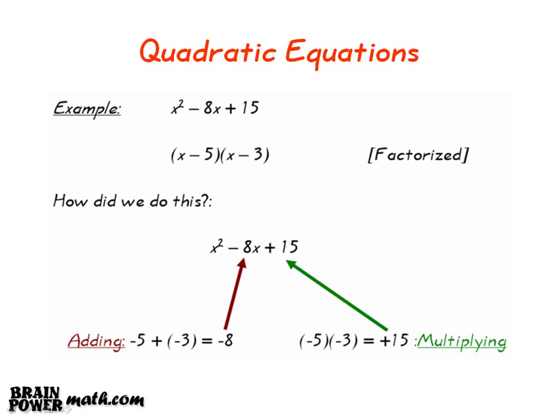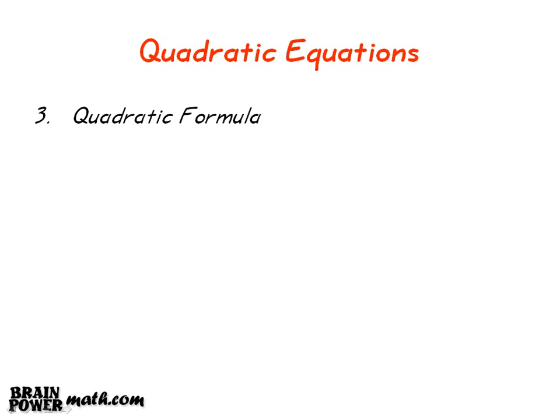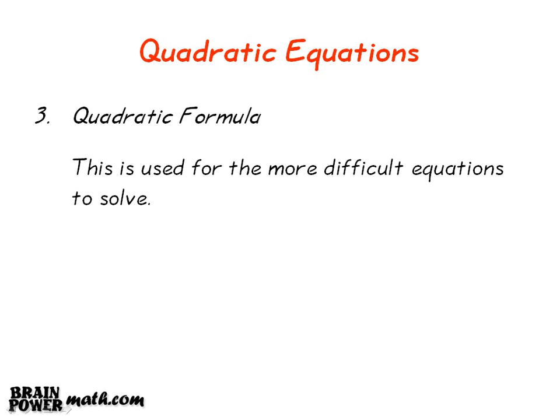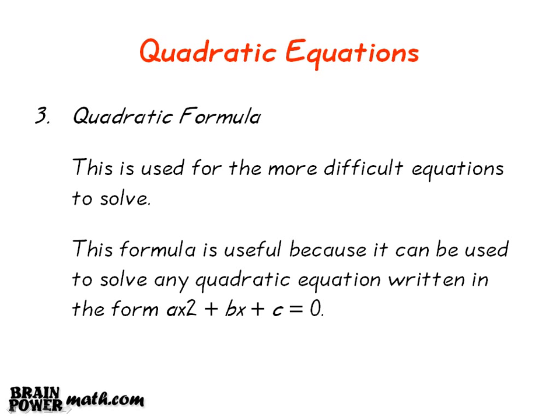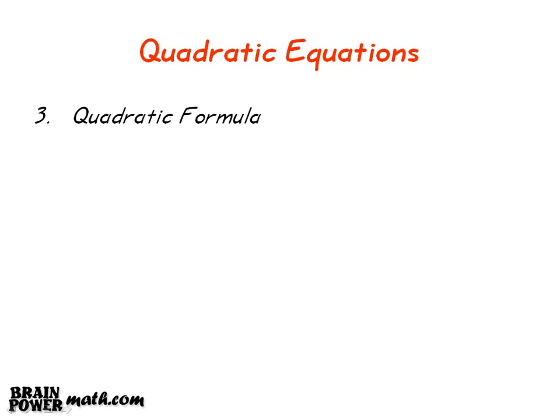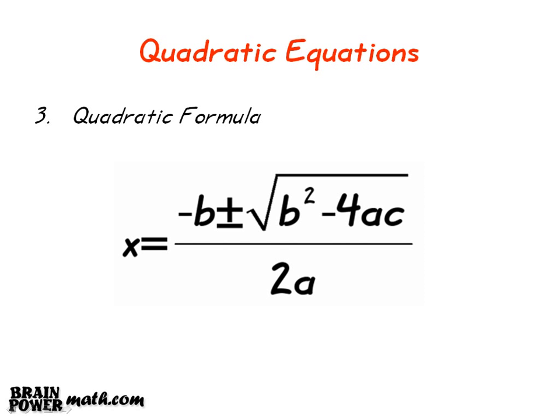Let's now look at the quadratic formula. This is used for the more difficult equations to solve — for example, ones that might involve fractions, decimals, etc. This formula can be used to solve any quadratic equation written in the form ax squared plus bx plus c is equal to 0. The formula states that x is equal to minus b, plus or minus the square root of b squared minus 4ac, all divided by 2a. Remember when using this formula that all the top line is over 2a.